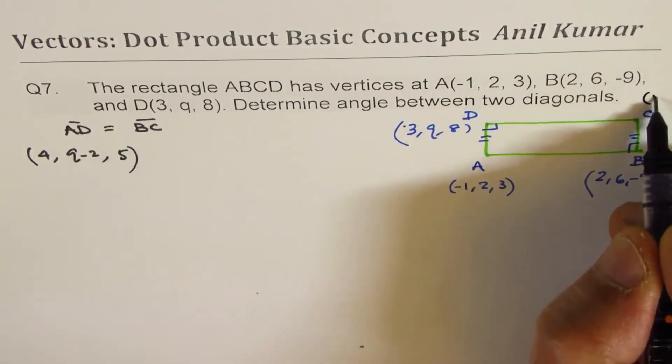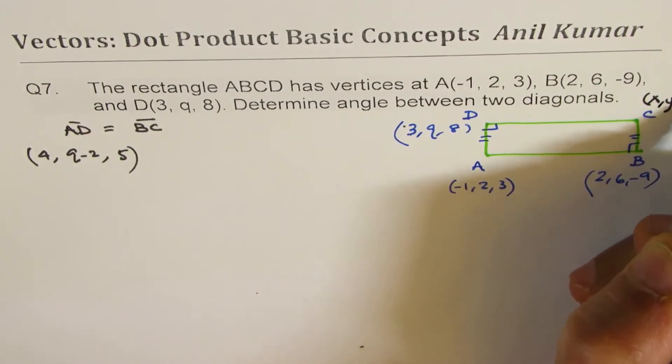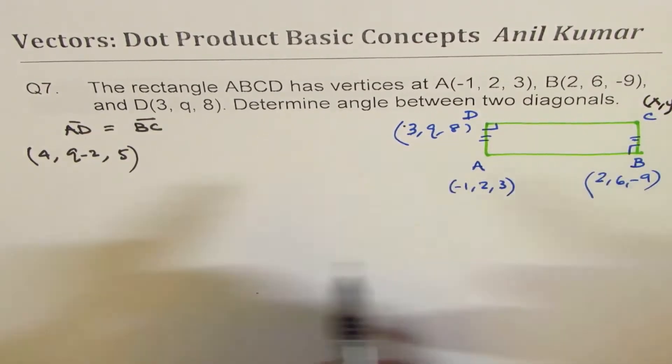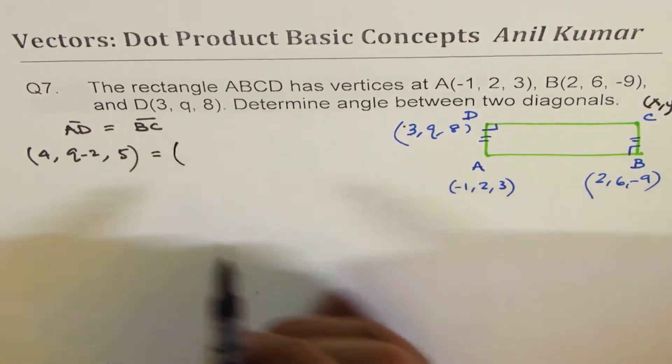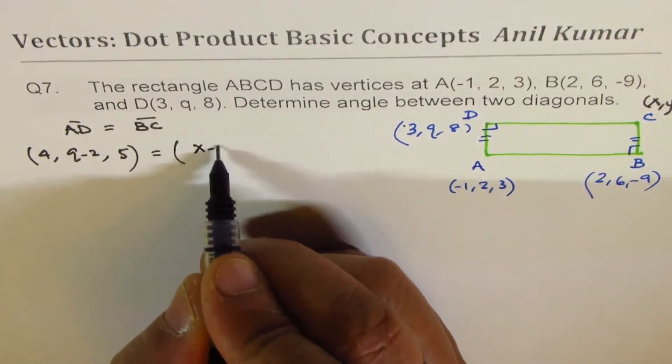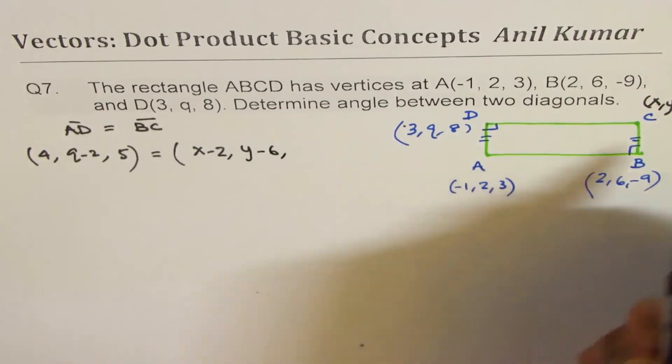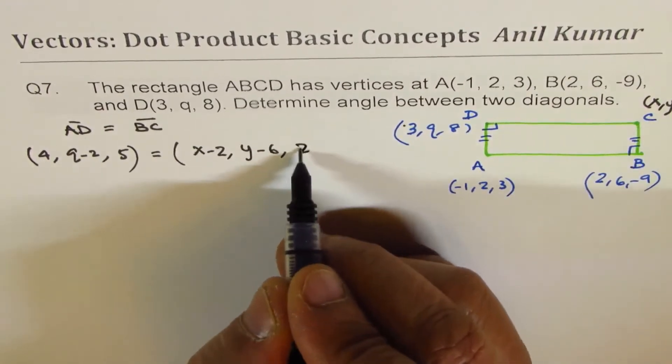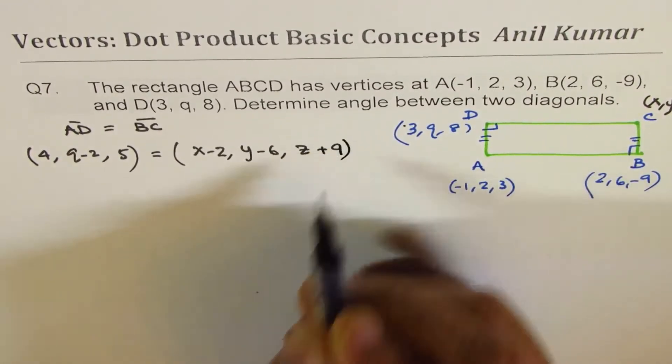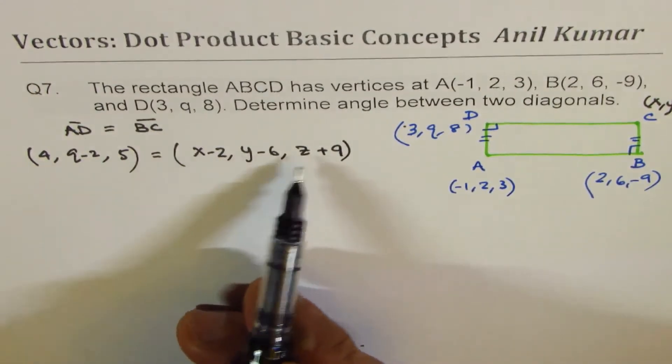Now C, we don't know, so we'll write this as X, Y, Z. So it is equal to (X-2, Y-6, Z+9). So from here clearly,